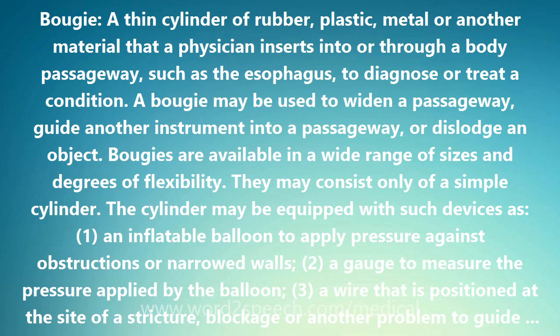To remove an object lodged in the esophagus, a lubricated bougie may be used to dislodge the object and move it down into the stomach. The object then passes through the intestines. This procedure is feasible only if the object is unlikely to damage tissue as it moves through the intestinal tract.